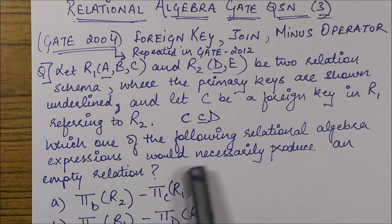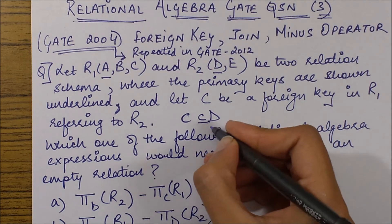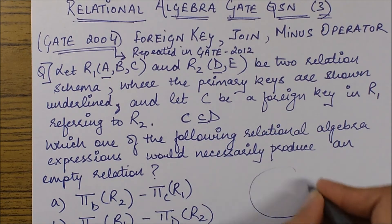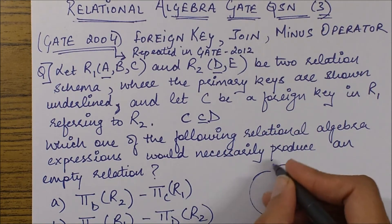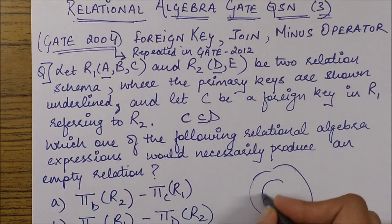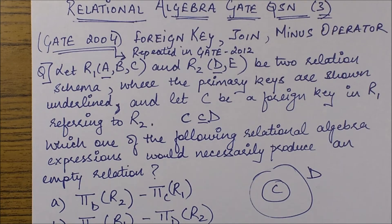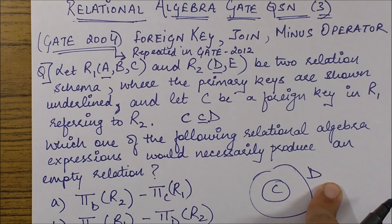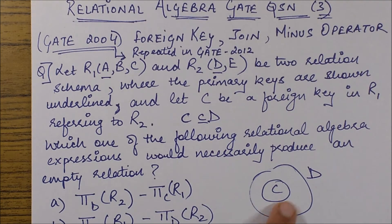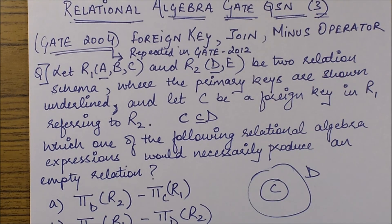The question asks which relational algebra expression would necessarily produce an empty relation. If we visualize this concept, D is a superset of C. An empty relation will be produced when we subtract D from C — since C cannot have values outside of D.